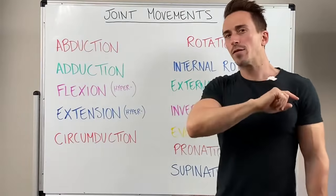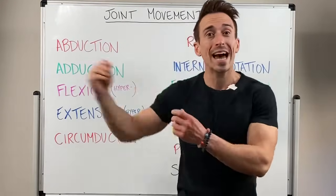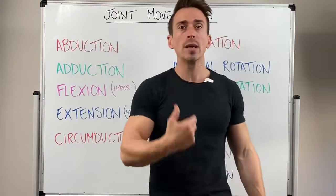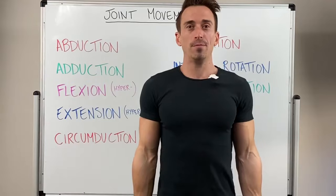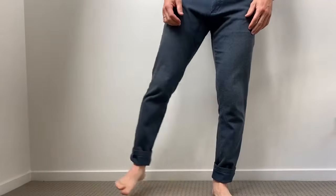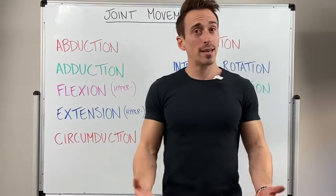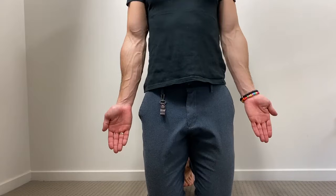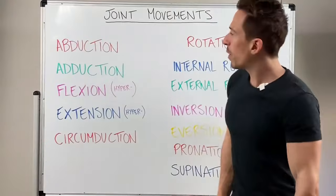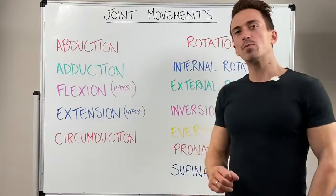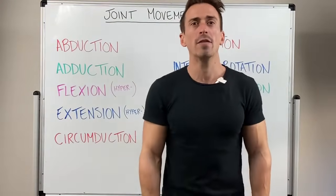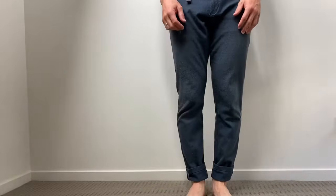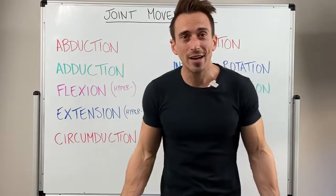Abduction is the first one. What does it mean if somebody's been abducted? It means they've been taken away — that's what abduction means. It means take away from the body, or take away from the midline of the body. So abduction of the arm, abduction of the leg — that's abduction. You can also have abduction of the fingers. Then when we look at adduction, this is bringing back toward the body, back toward the midline. So you can have adduction of the arm, adduction of the leg, and adduction of the fingers.